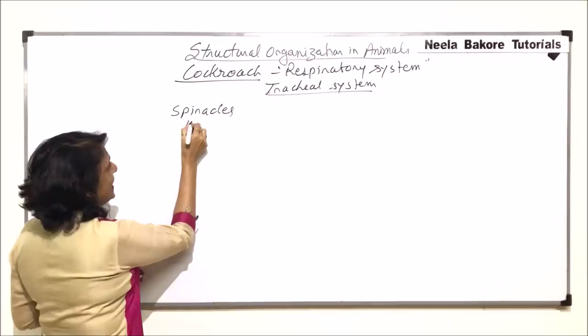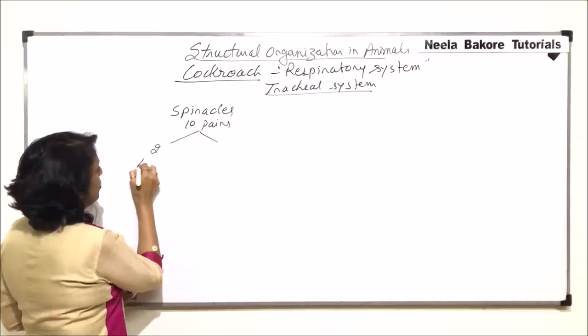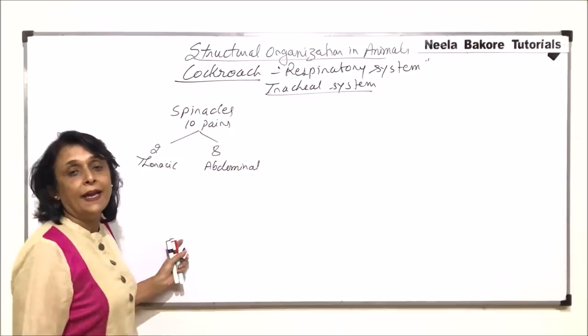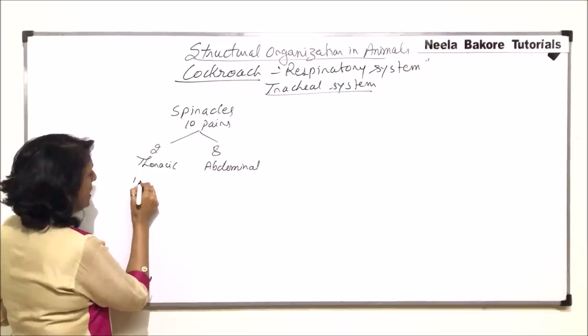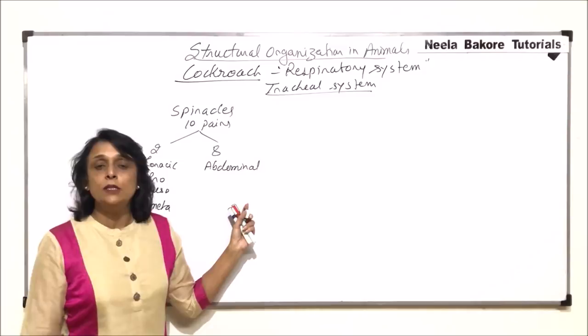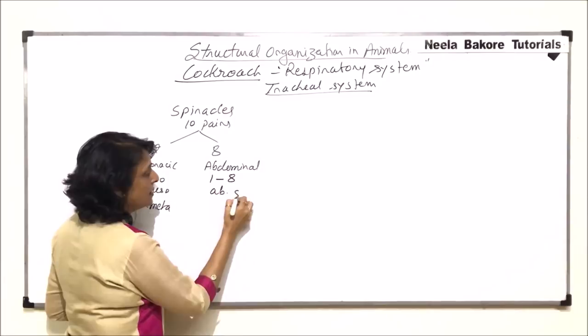There are 10 pairs of spiracles. Out of these 10, 2 are thoracic and the remaining 8 are abdominal. The thoracic spiracles are located between pro and mesothorax, and between meso and metathorax. The abdominal spiracles are found in all abdominal segments 1 to 8.